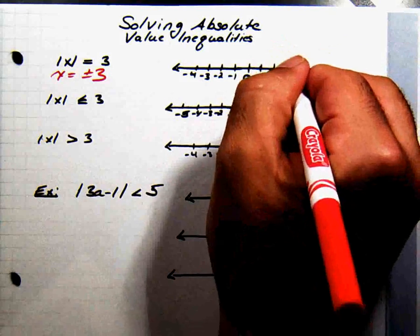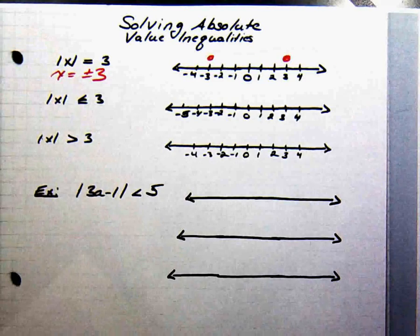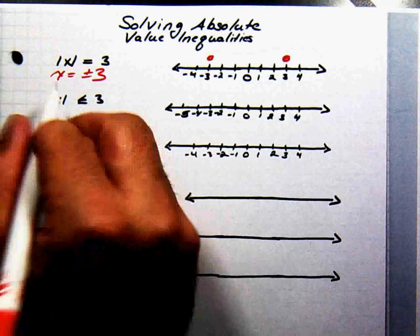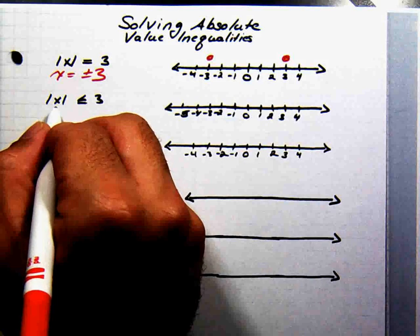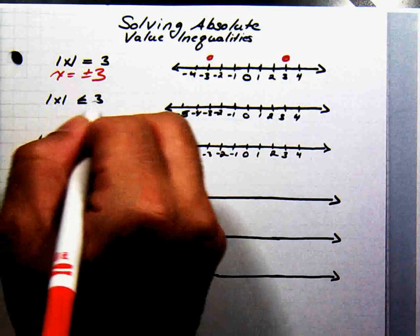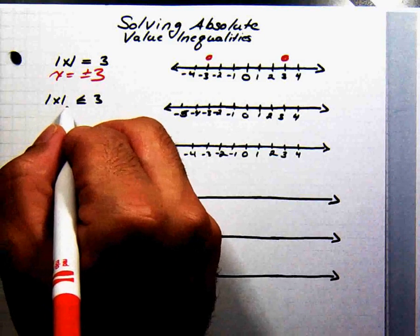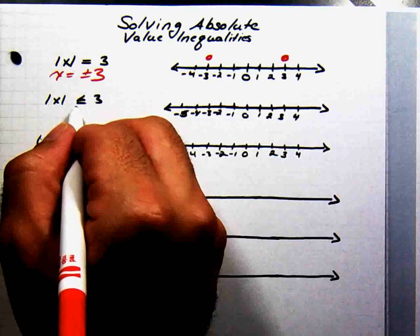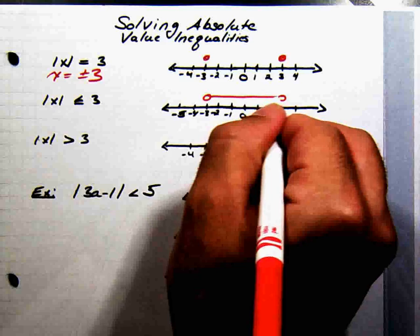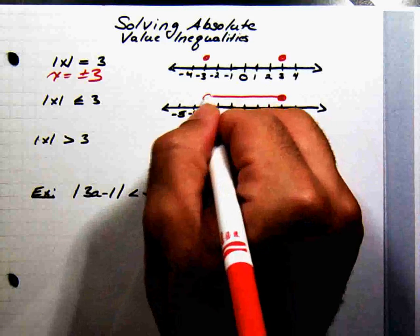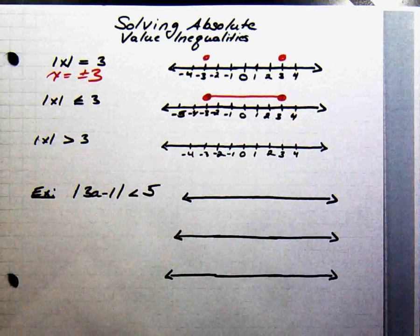If you want to look at that on a graph, it looks something like that. Now if we want to think about it as an inequality, this no longer says a number whose distance is 3. This is a set of numbers whose distances are less than or equal to 3 from 0 — all the numbers in between negative 3 and 3 inclusive, the closed interval.